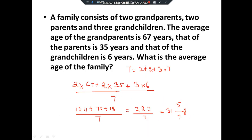Next question: A family consists of two grandparents, two parents and three grandchildren. The average age of the grandparents is 67 years, that of the parents is 35 years, and that of the grandchildren is 6 years. Find the average age of the family. Total age = 2 × 67 + 2 × 35 + 3 × 6. Total number of members = 2 + 2 + 3 = 7. Average = total age ÷ 7, which gives 222/7, simplified to 31 and 5/7 years.